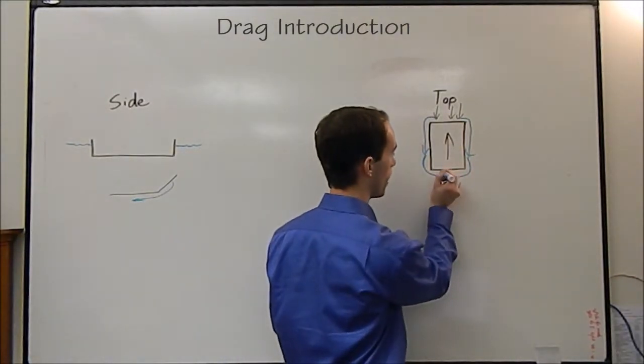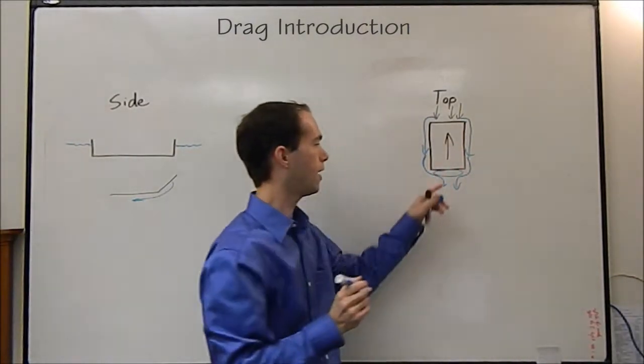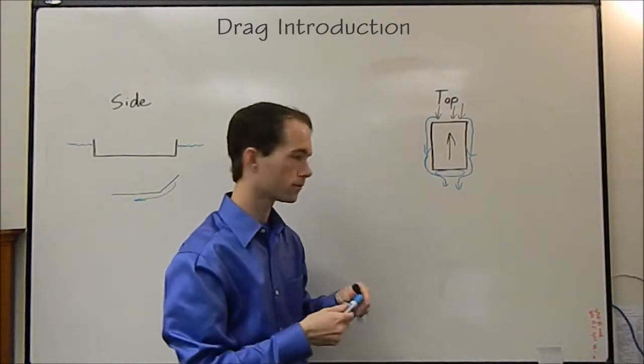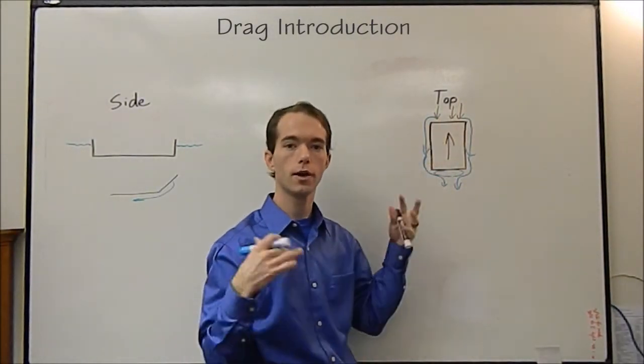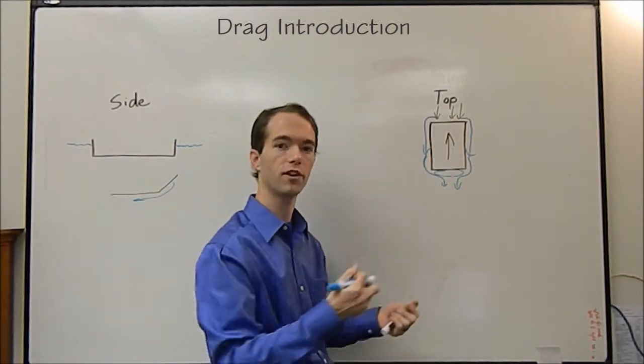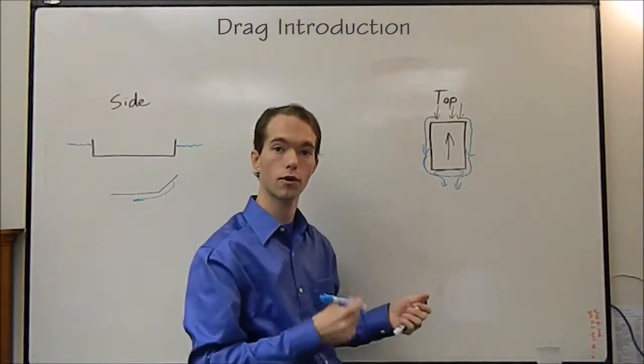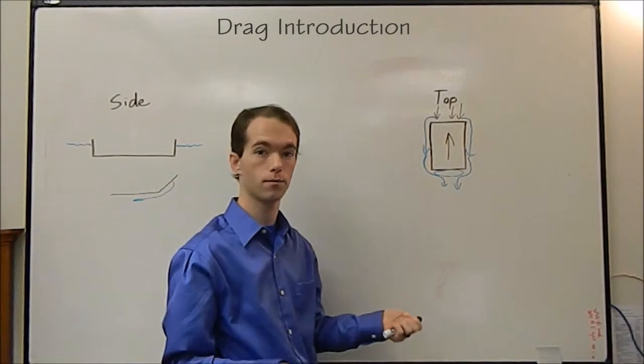But then the form drag also creates a bubble of negative pressure right there. And so when you add this negative and this positive, you get a huge pressure differential that's resisting the forward motion of your boat or your car, whatever vehicle you're in.